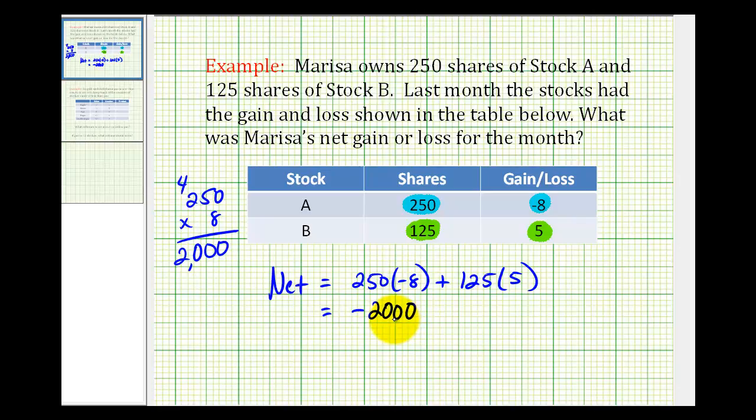Plus, and here we have 125 times five. So we have twenty-five, we carry the two. Five times two is ten plus two is twelve, carry the one. Five times one plus one is six. So we have positive six hundred twenty-five.